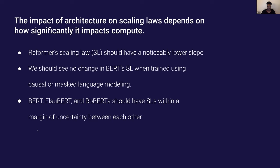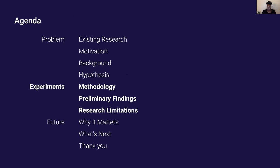My hypothesis is that the impact of transformer architecture on scaling laws depends on how significantly that architecture impacts model size, dataset size, and most likely compute. Given Reformer's focus on reducing memory and compute during training that's embedded in its architecture, my prediction was that the Reformer architecture would particularly outperform the other models. Given the insight from the original paper on how weakly performance trends with model shape, I predicted that BERT scaling laws would have little to no change between the causal and masked versions, and that all of the masked language models would have scaling laws within a margin of uncertainty or differ only by a constant pre-factor.